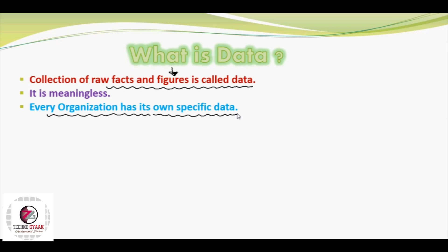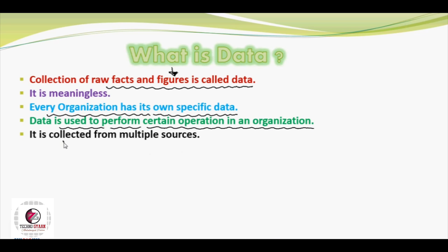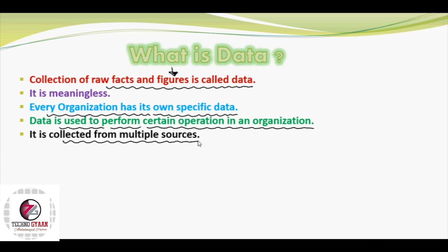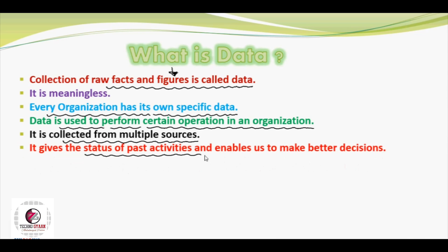Data is used to perform certain operations in an organization. The functionality of any organization depends on its data — processing is performed on its data to get required results. This data is collected from multiple sources. For example, if we talk about a patient information system, a hospital collects its data from patients. A university collects its data from students after exams. So when any organization needs to collect data, multiple sources can be available.